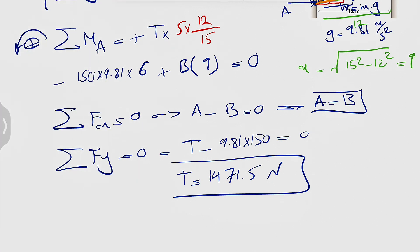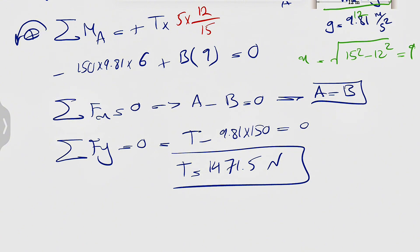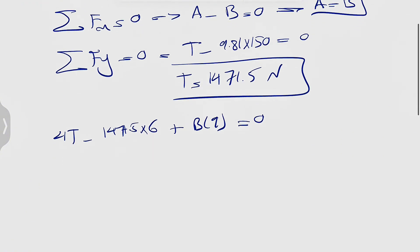If we just put our T in the moment equation, we should be able to find B. So we can simplify this: 4T minus 1471.5 times 6 plus B times 9 equals 0. Our B would be 4 times 1471.5 minus 6 times 1471.5 divided by 9.